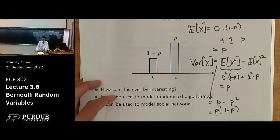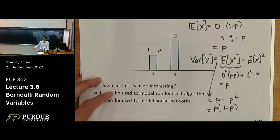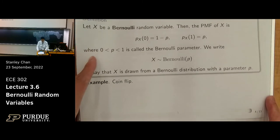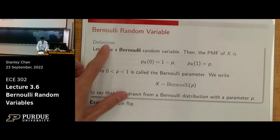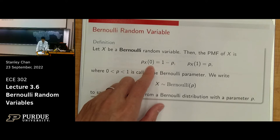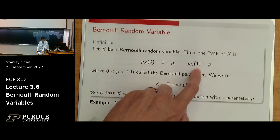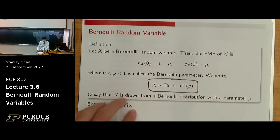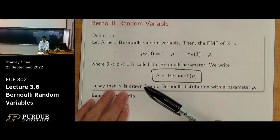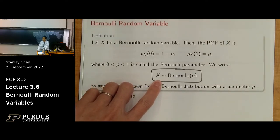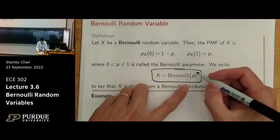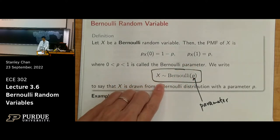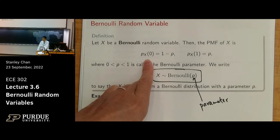We know everything about this random variable: the mean, the variance, and the PMF. The definition of a Bernoulli random variable is a two-state random variable with states zero and one. Usually the probability of getting one is p and the other is 1−p. The notation we'll use is X ~ Bernoulli(p), meaning X is a Bernoulli random variable with parameter p. The parameter p goes with state one, and the other state is its complement, 1−p.